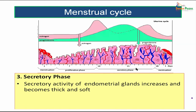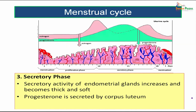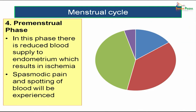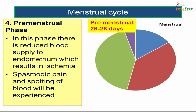In the secretory phase, the endometrial glands have increased secretory activity and the layer becomes thick and soft. Progesterone secreted by the corpus luteum is responsible for this phase, and spiral arteries become more coiled than in the proliferative phase. In the premenstrual phase, there is reduced blood supply to the endometrium, and spasmodic pain with spotting of blood is experienced, followed by menstrual blood flow.